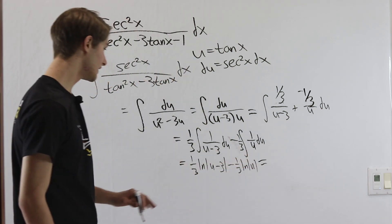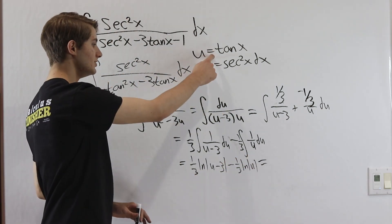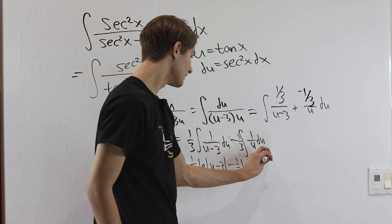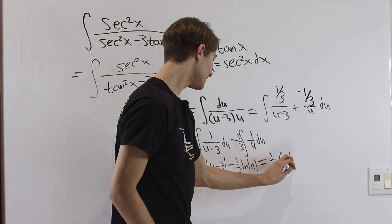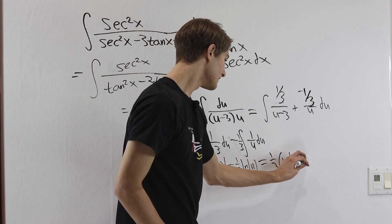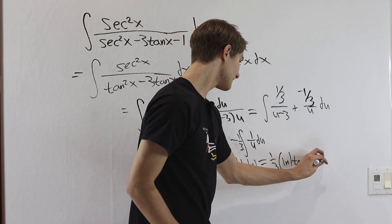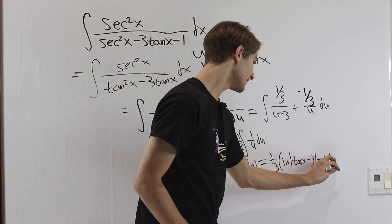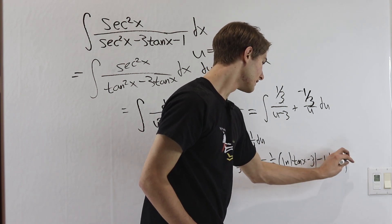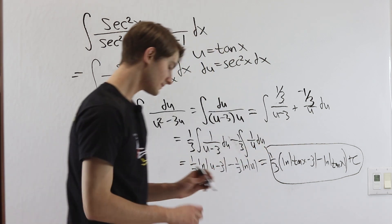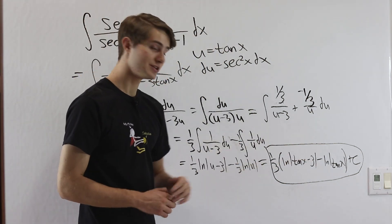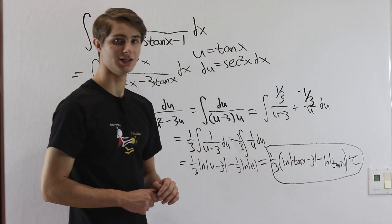And once we get here we just have to plug in u equals tangent x. I'm going to factor out the 1 third in both of these. So we'll have natural log of tangent x minus 3 minus the natural log of tangent x. And with that we've finished our integral. You can do a little simplification on this if you'd like but I'm just going to leave it in this form.